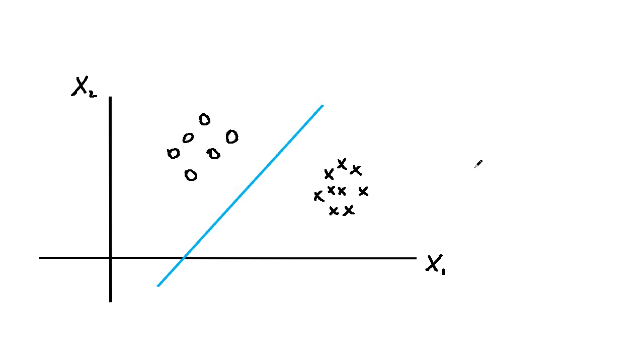The maximal margin classifier is used in this case. If the xi's can't be separated by a line or hyperplane, we can still try to separate the two classes with a line or hyperplane using the support vector classifier.